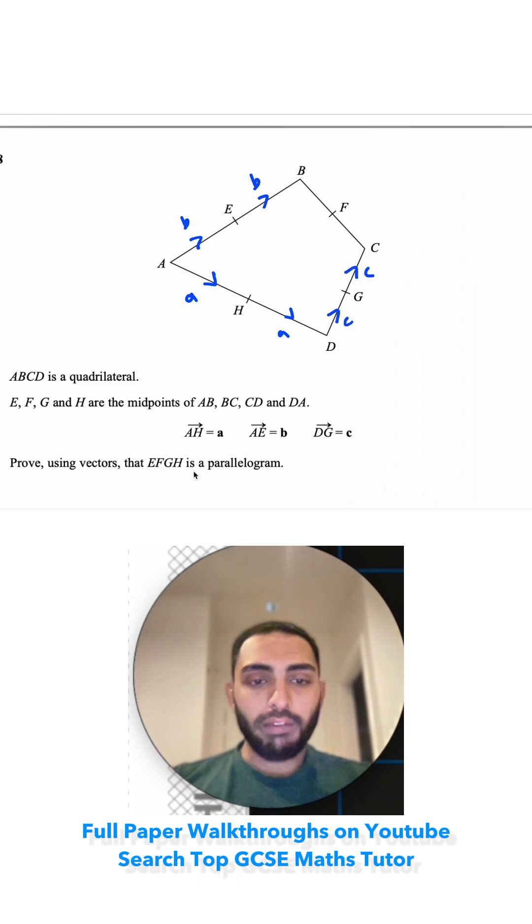Prove using vectors that EFGH is a parallelogram. What's the definition of a parallelogram? Parallelograms have two pairs of parallel sides and two pairs of equal sides, so that's what we're going to have to prove.